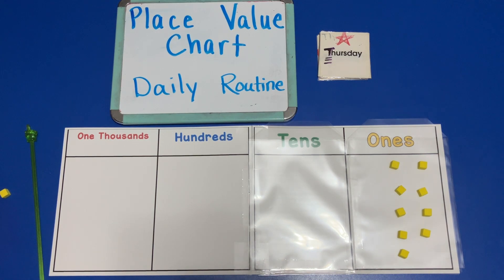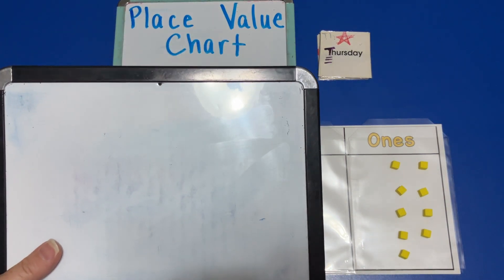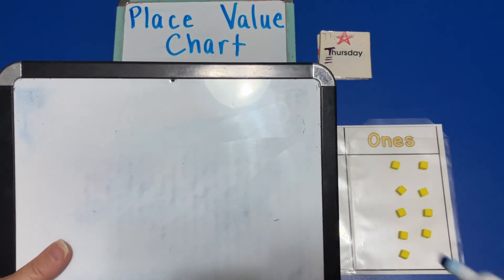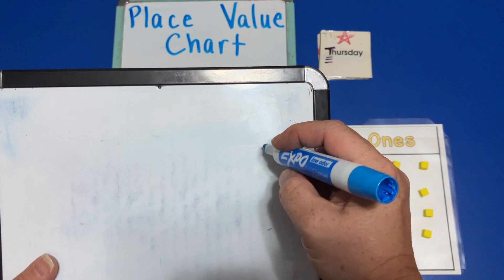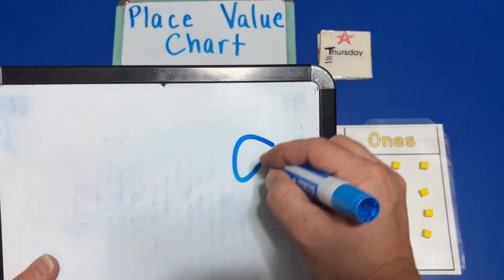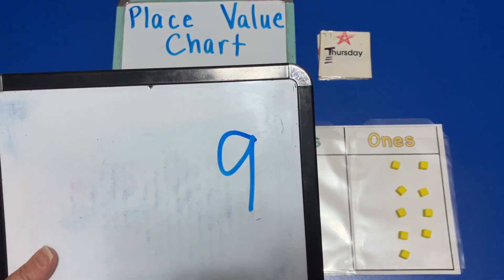So what is the value of the base-10 blocks on our place value chart on Thursday? The value on Thursday is nine.